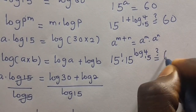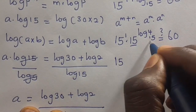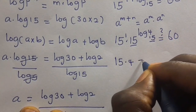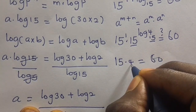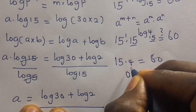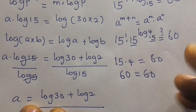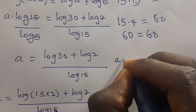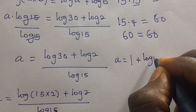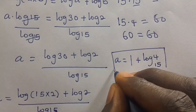This gives us 15 times 4, because 15 to the power of log base 15 of 4 equals 4. So 4 times 15: 4 times 5 gives 20, carry the 2; 4 times 1 is 4, plus 2 gives 6 — so this equals 60. Therefore A equals 1 plus log 4 in base 15 satisfies the problem given to us.